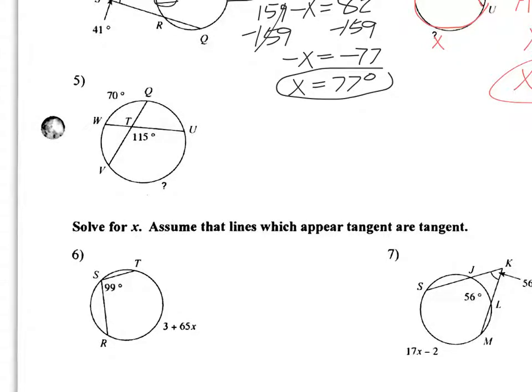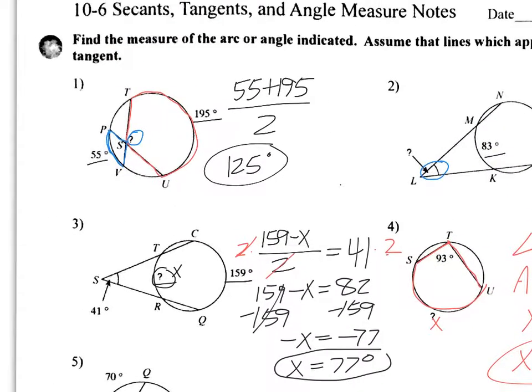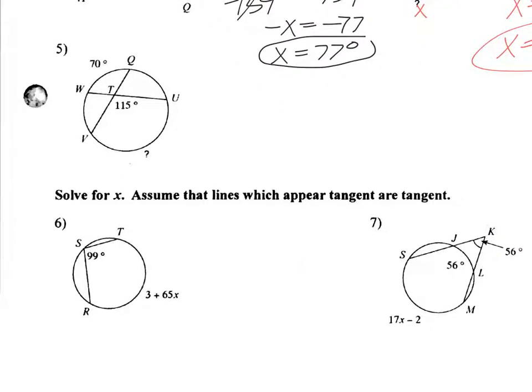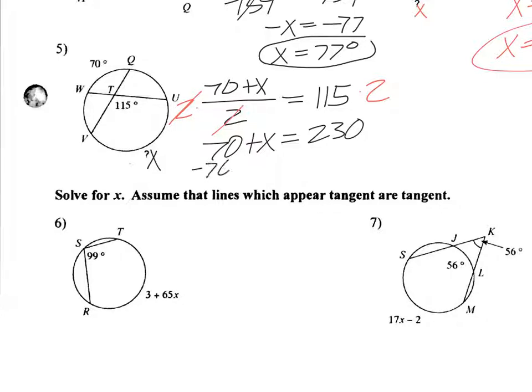Number 5. This is very similar to problem number 1. In number 1, we were finding the angle on the inside. This time we know the angle. So here, what we're going to do, here's our x. So this one's going to be 70 plus x. Remember, on the outside you add. Divided by 2 equals the angle, which is 115. So just like the earlier problem, we're going to multiply both sides by 2. So that's 70 plus x equals 230. Subtract 70. We get x is 160.